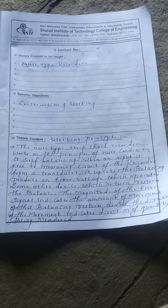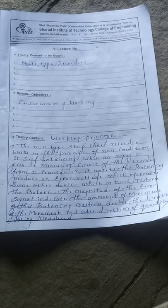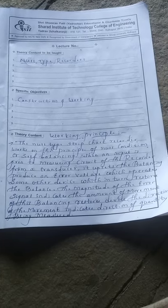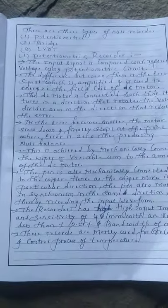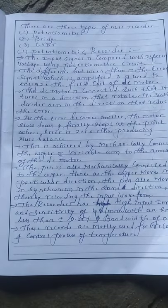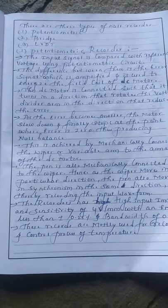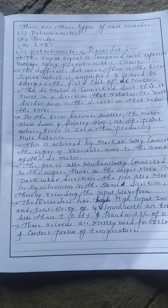First, we will discuss the working principle of null type recorder. The null type strip chart recorder works on the principle of null condition or self-balancing. There are three types of null type recorders: potentiometric, bridge, and LVDT.